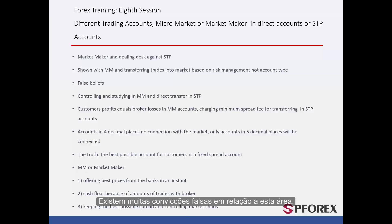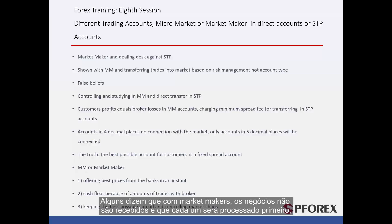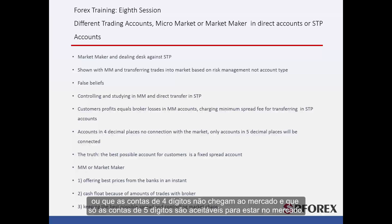There are many false beliefs regarding this area. Some say that with market makers, orders are not received properly and every single one will be processed first, or that customers' profit is equal to the broker's losses, and that in STP accounts brokers can only take their commission, or that accounts with 4 digits will not make it to the market and only 5-digit accounts are eligible to be in the market. As mentioned, these are all false beliefs, and in order to make things clear we will illustrate all broker activity in the future.